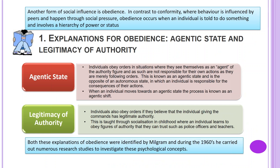We'll begin with another form of social influence: obedience. In contrast to conformity, where behavior is influenced by peers and happens through social pressure, obedience occurs when an individual is told to do something and involves a hierarchy of power or status.